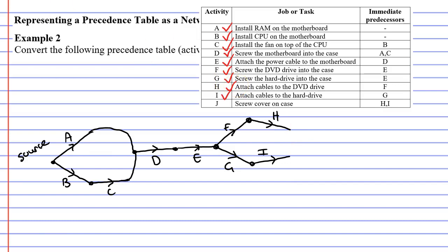Finally we have activity J. Activity J comes after two activities, activities H and I. If I was to draw an edge to represent activity J, I would need a vertex at the beginning of it to represent the completion of any immediate predecessors. And those immediate predecessors are activities H and I. So I need to extend those edges to meet at this point like so.